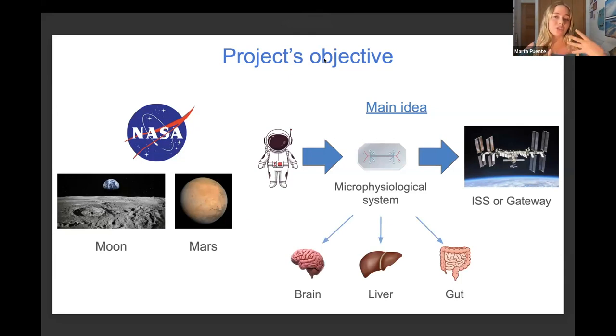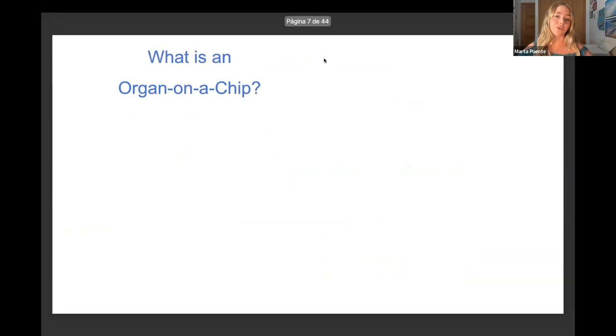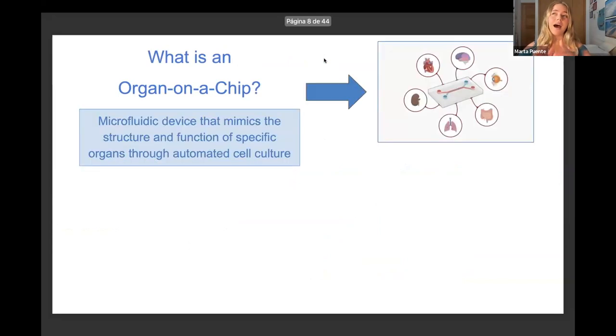To be able to understand how these chips work, it's very important to be familiar with the concept of organ-on-a-chip. An organ-on-a-chip is basically a new technology based on a microfluidic device that mimics both the structure and function of specific organs through automated cell culture on a microscale. We are talking about millimeters, so if we compare the size of these chips to the size of a normal human body, the difference is insane.